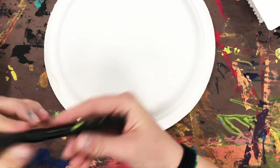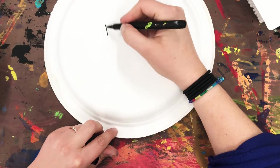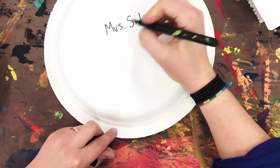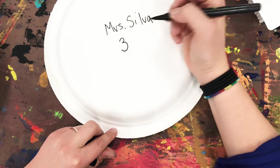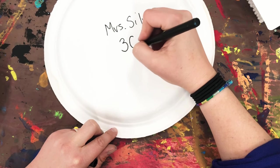First things first, I'm going to take my plate and on the back, I'm going to write my name and my teacher code. That's three for third grade and the first letter of your teacher's name.